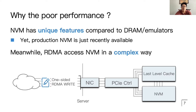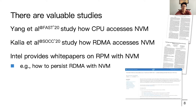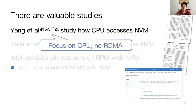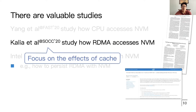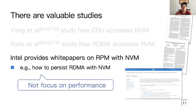Second, there are many hardware components involved in the interaction between RDMA and NVM, and each of them may cause performance degradation. There have been various studies on RDMA and NVM which we can use to build efficient systems, yet they are insufficient. For example, Yang's study focuses on how the CPU can best utilize NVM and doesn't consider RDMA. Calila's study examines challenges when using RDMA to access NVM, focusing on the impact of processor cache. Intel provides white papers for developers to correctly program RDMA with NVM, yet they don't focus on performance features of production NVM.